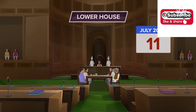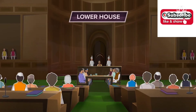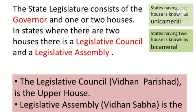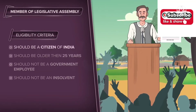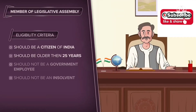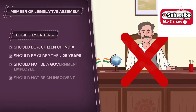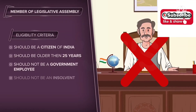However, the assembly is not a permanent body. All members are dismissed after their tenure is over and fresh elections are held to elect new members. The qualifications for a candidate who wants to be a Member of the Legislative Assembly are decided by the Constitution of India. They are: one, he or she should be a citizen of India; two, he or she should not be less than 25 years of age; three, he or she should not hold any office of profit under the government — in other words, the person should not be a government employee.